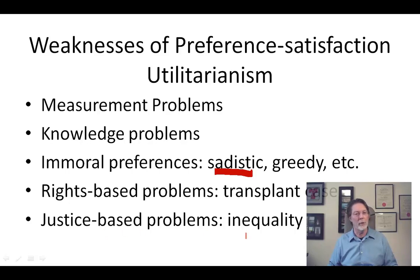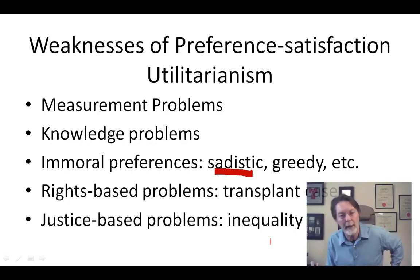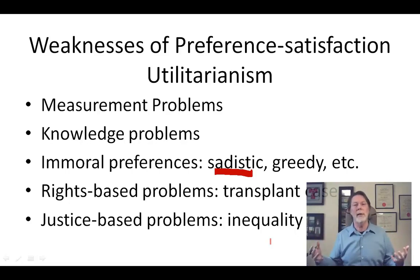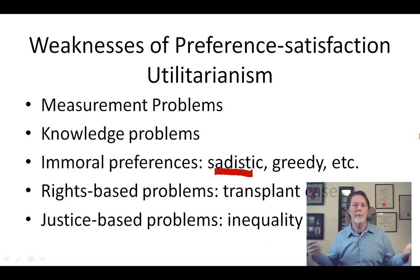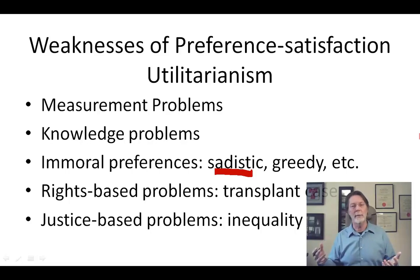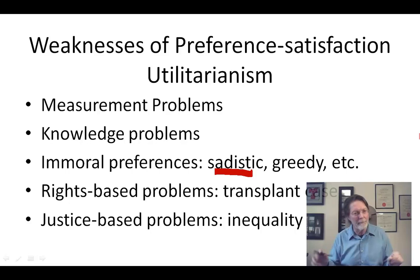There are also rights-based and justice-based problems. There could be grave inequality — a situation in which a minority is oppressed or exploited could be the one that produces the greatest amount of preference satisfaction, highest GDP, whatever. In that case, preference satisfaction utilitarianism has to say this is the right thing to do, and that seems wrong as well.